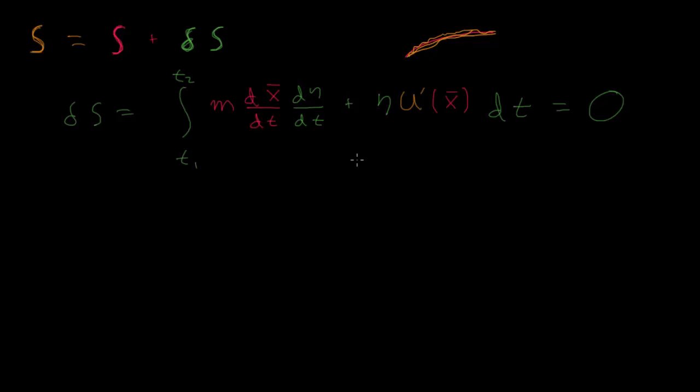So one way we could ensure that this is zero, regardless of the form that eta takes, we could try to rewrite it in a way that has an integral over time again of something times eta, integrated over time equals zero. And if we could say that this thing in here equals zero, then for anything that eta is, the integral will have to be zero. Because zero times eta is always zero, and if this is always zero, the integral will always be zero.